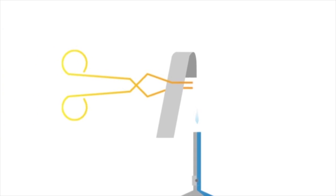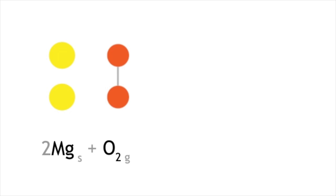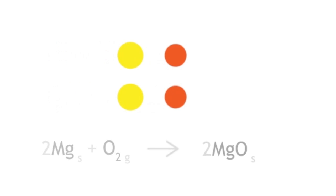Using a pair of tongs, take the magnesium strip and hold it to a roaring Bunsen burner flame. The combustion of magnesium proceeds with a bright white flash. Take care not to look at this flash. Magnesium reacts with oxygen to produce magnesium oxide, which is a white solid.